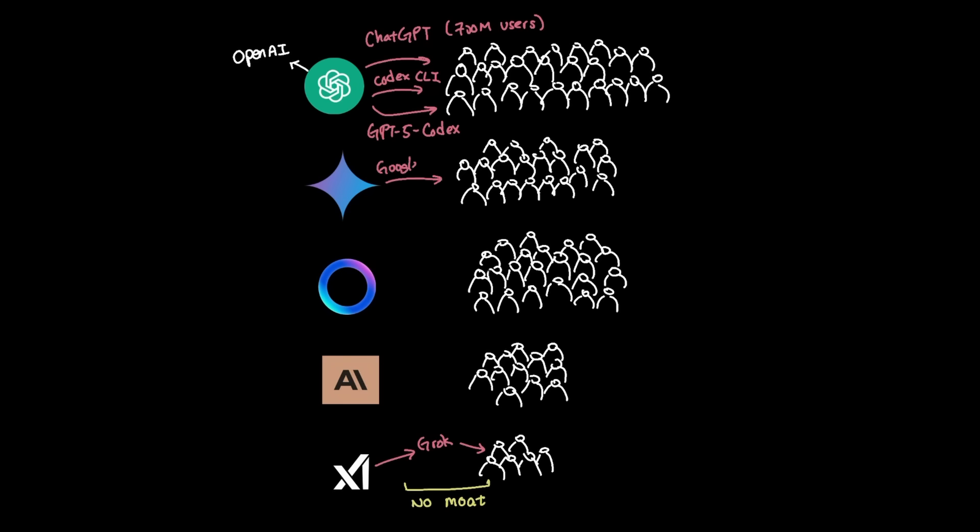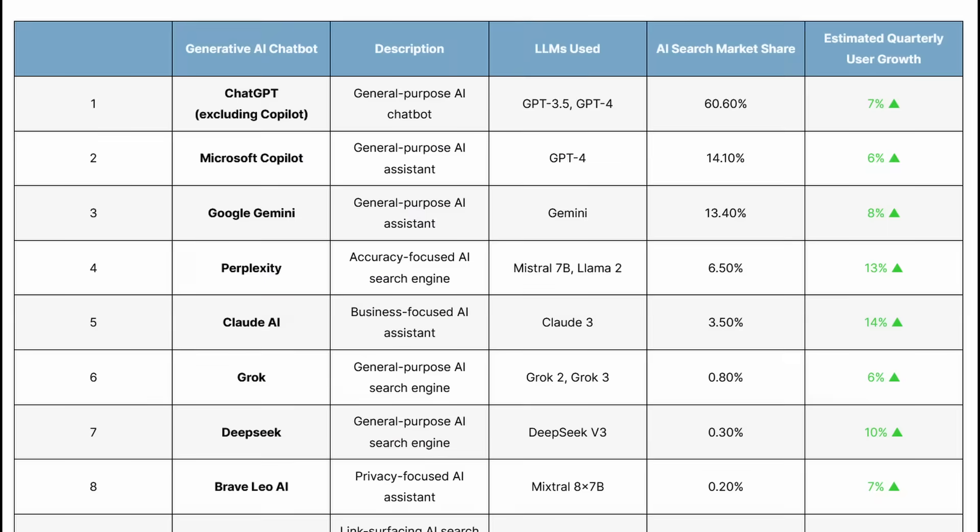Similar things can be said for Google and Gemini, where they have a huge moat in their existing ecosystem of Google products as well as search and YouTube. Meta also has immediate access to mainstream products like Instagram, WhatsApp, and Facebook. And Anthropic also has a strong grip in the coding market with Claude Code.